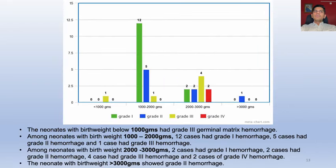The neonate with birth weight below 1000 grams had grade 3 Germinal Matrix Hemorrhage. Among neonates between 1000 and 2000 grams: 2 cases had grade 1, 5 cases had grade 2, and 1 case had grade 3 hemorrhage. Among neonates between 2000 and 3000 grams: 2 cases had grade 1, 2 cases had grade 2, 4 cases had grade 3, and 2 cases had grade 4 hemorrhage. The neonate with more than 3000 grams birth weight showed grade 2 hemorrhage.